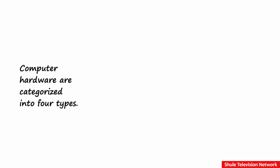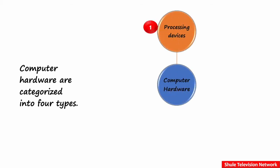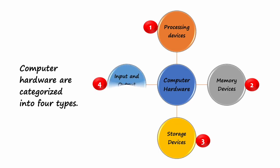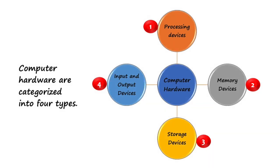Computer hardware are categorized into the following four types: 1. Processing devices. 2. Memory devices. 3. Storage devices. And 4. Input and output devices.